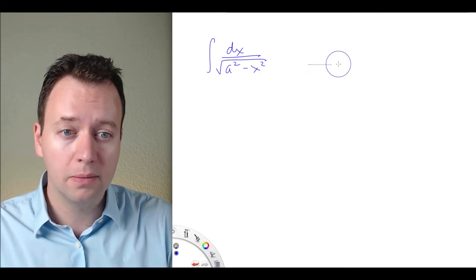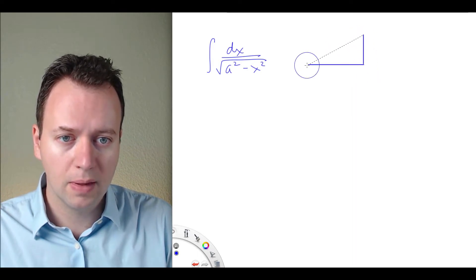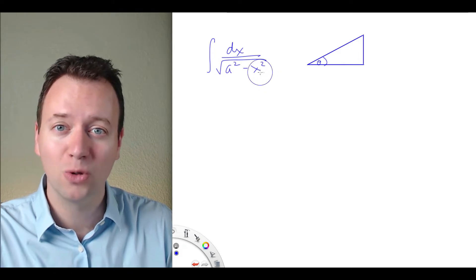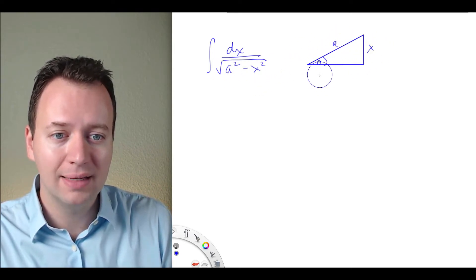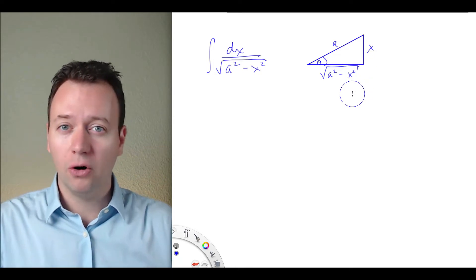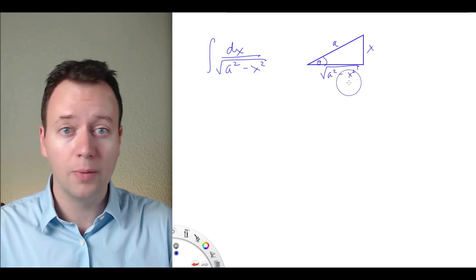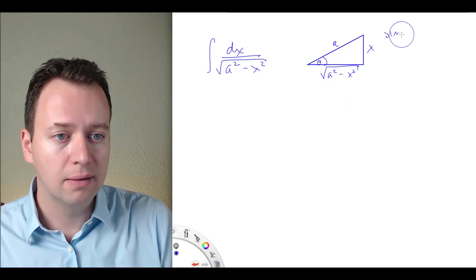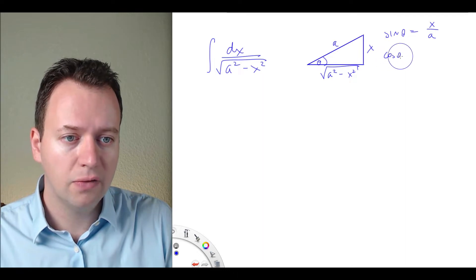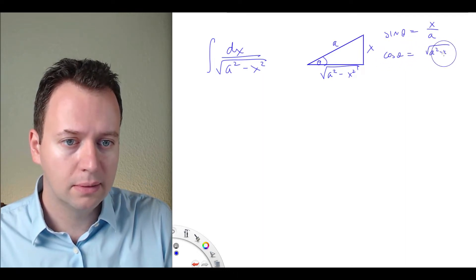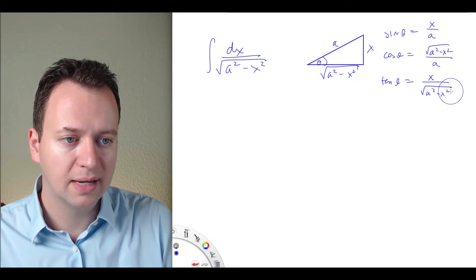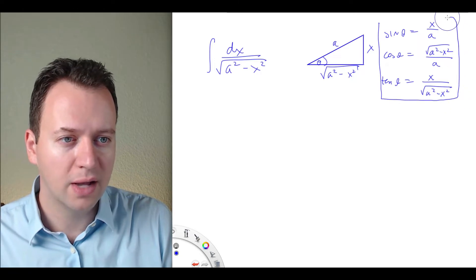Let's draw our right triangle with angle theta. Now let's identify the hypotenuse. It's the square root of a squared minus x squared, so a should be the hypotenuse, x is one of the legs, and then the square root of a squared minus x squared is the second leg. Now that we have our right triangle identified, we're going to write down our three main trigonometric relations: sine, cosine, and tangent. Sine of theta is opposite over hypotenuse, so that's x over a. Cosine of theta is adjacent over hypotenuse. And then tangent of theta is equal to x over the square root of a squared minus x squared. Those are our three main trig functions expressed in terms of x.